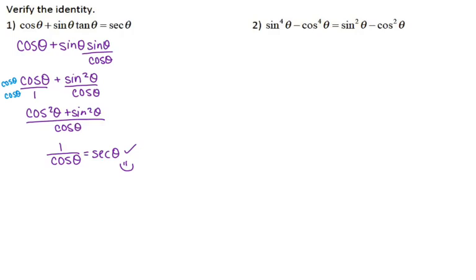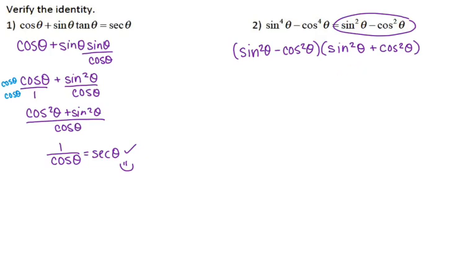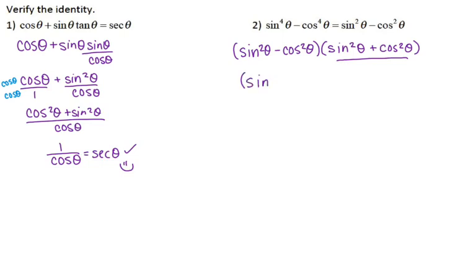For number two, any time you see anything raised to the fourth and you're subtracting, that's a difference of squares. So you should start by factoring. Sine to the fourth minus cosine to the fourth factors to sine squared theta minus cosine squared theta, times sine squared theta plus cosine squared theta. Our goal is to get sine squared theta minus cosine squared theta, which is exactly what we have. Sine squared plus cosine squared is one of your Pythagorean identities and equals one, so we have sine squared theta minus cosine squared theta times one — which is itself. Identity verified.